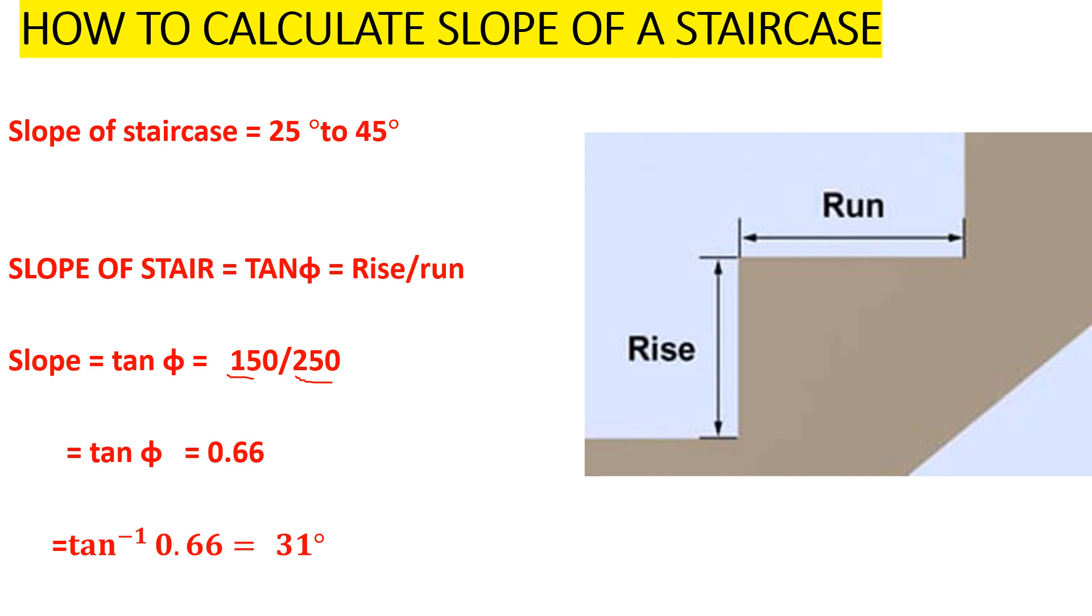which gives us 31 degrees. So when you are constructing your staircase, the slope, that angle, should be 31 degrees. That is for a case whereby you have a rise of 150 millimeters and a run of 250 millimeters.